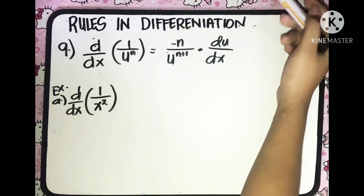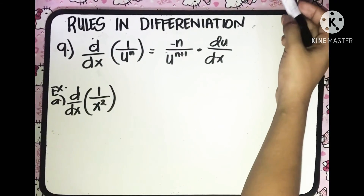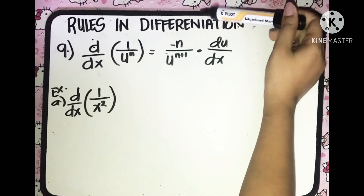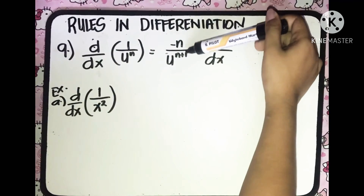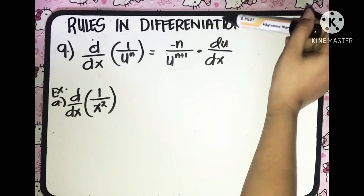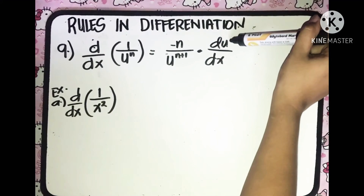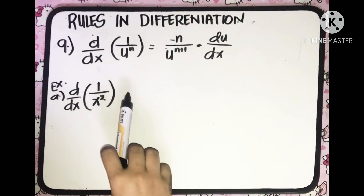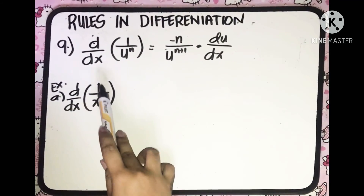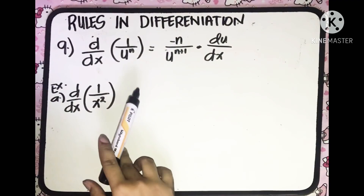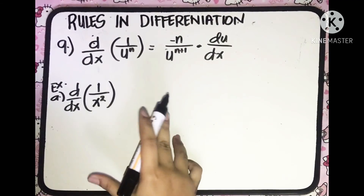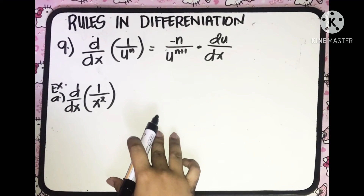The last rule: the derivative of 1 over u raised to n with respect to x is equal to negative n all over u raised to (n plus 1), multiplied to the derivative of u with respect to x. In example, we have the derivative of 1 over x squared with respect to x. You might think the quotient rule can be used here — well, it cannot.